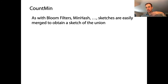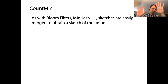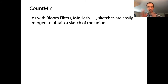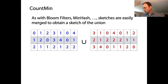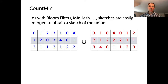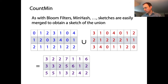If we have a count min sketch of data set A and a count min sketch of data set B, both constructed with the exact same hash functions and the same dimensions, then the task of creating a new sketch that represents both data sets would simply be an element-wise addition of those two count min sketches.